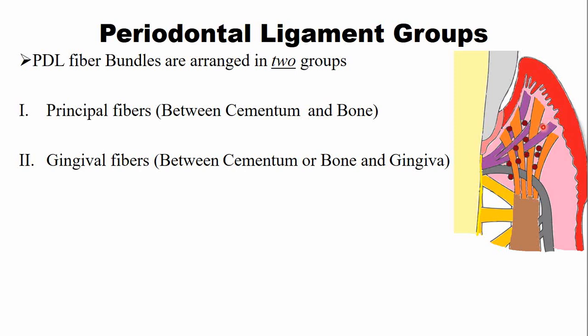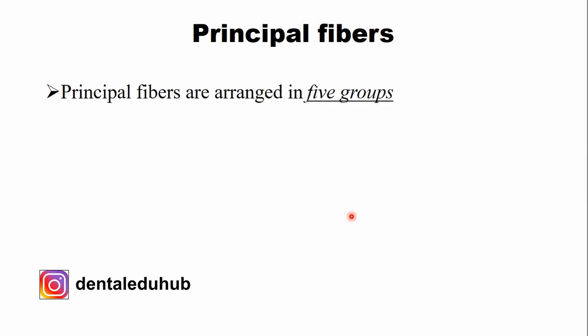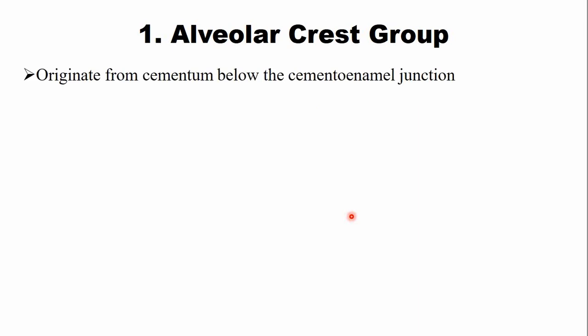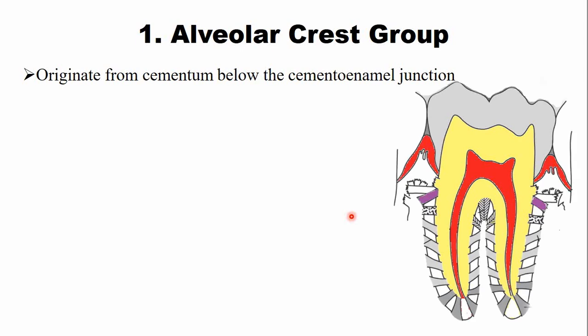The principal fibers are divided into five different groups. The first is the alveolar crest group. These fibers originate from the cementum just below the cementoenamel junction and they insert into the crest of the alveolar bone.